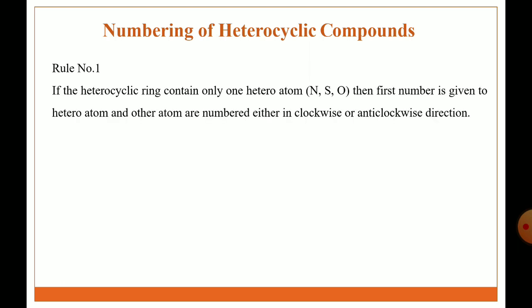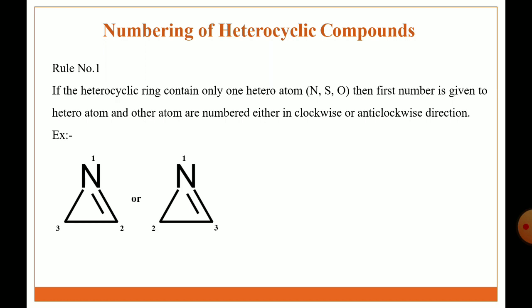Numbering of heterocyclic compounds. Rule 1: if the heterocyclic ring contains only one heteroatom — that means nitrogen, sulfur, or oxygen — then the first number is given to the heteroatom and other atoms are numbered either in a clockwise or anticlockwise direction. This is a three-member heterocyclic ring containing nitrogen as a heteroatom; name is azirine. The first number is given to the nitrogen and other atoms numbered either clockwise or anticlockwise.